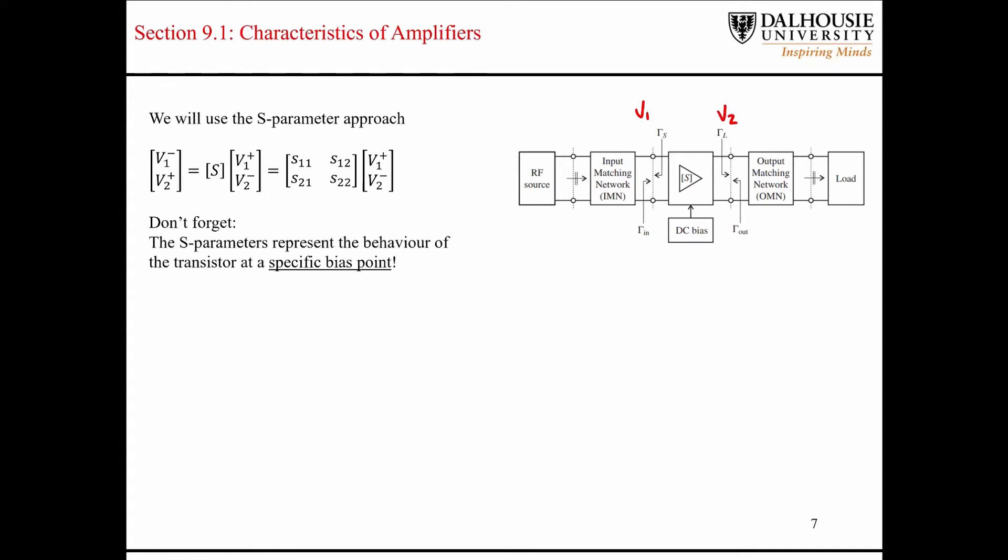But for forward traveling waves, so all waves traveling from left to right, I'm representing that by a plus sign. And then all of the waves traveling from right to left, I'm representing that by a negative sign. So for example, let's take this guy here, V2-. That's going to be the backwards traveling wave on the output side of the amplifier here.